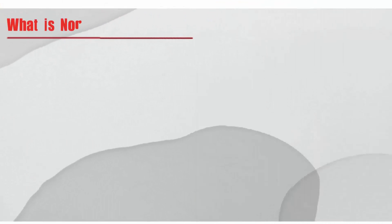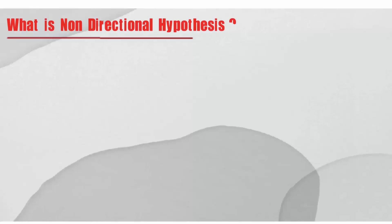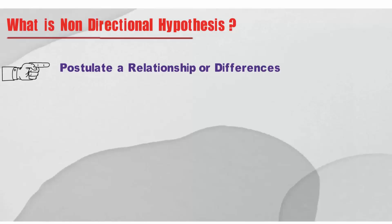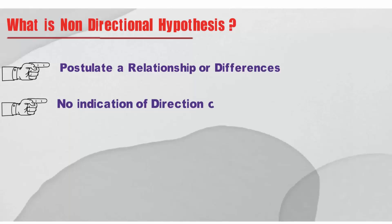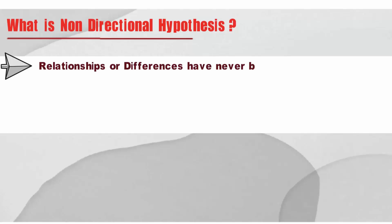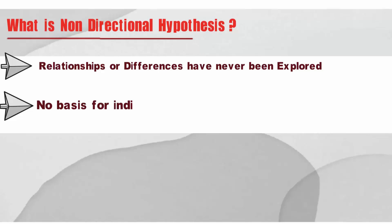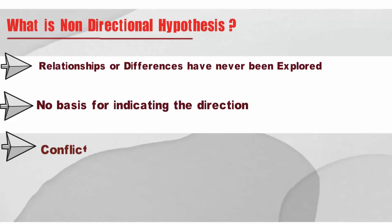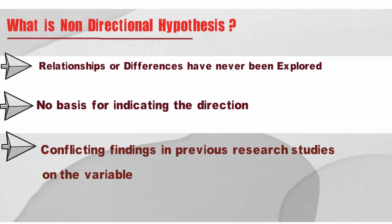What are non-directional hypotheses? Non-directional hypotheses are those that do postulate a relationship or differences, but offer no indication of the direction of these relationships or differences. A non-directional hypothesis is formulated either because the relationship or difference has never been explored and hence there is no basis for indicating the direction, or because there have been conflicting findings in previous research studies on the variables.